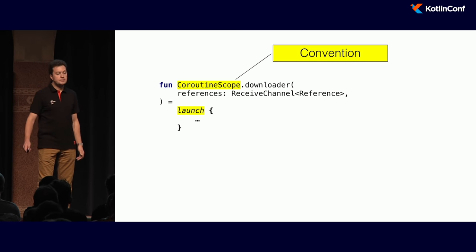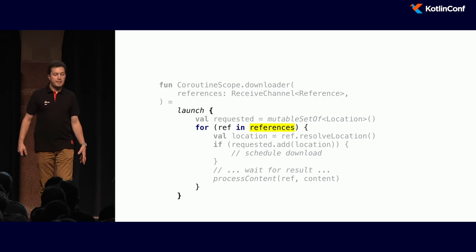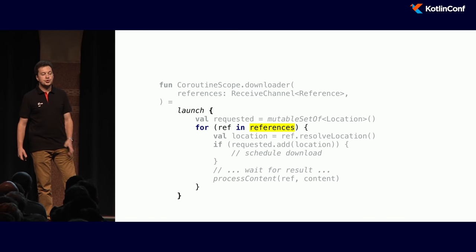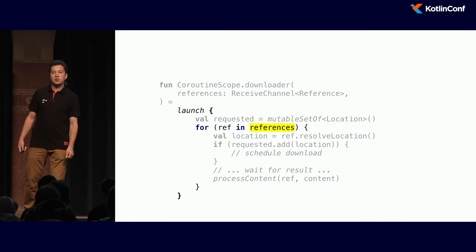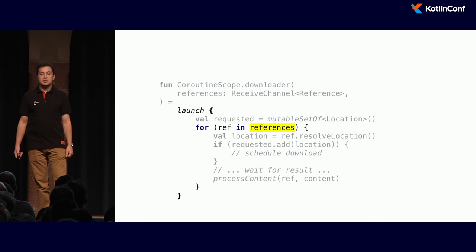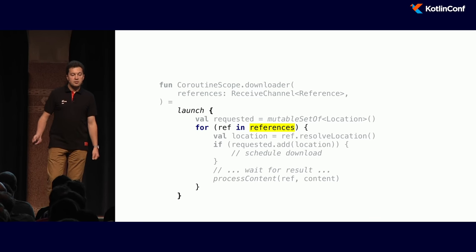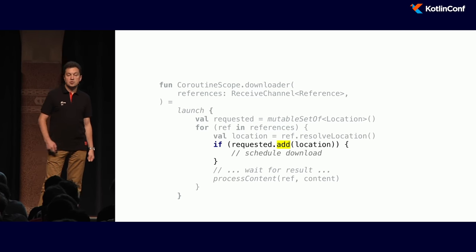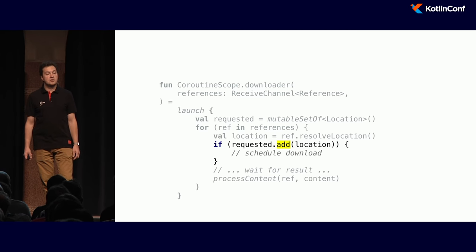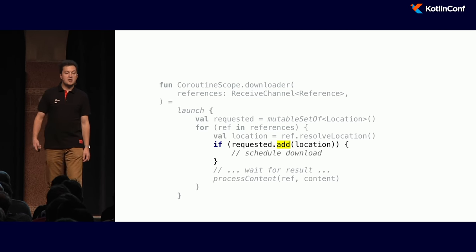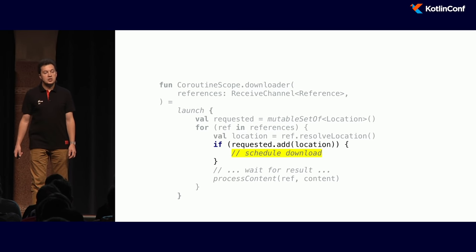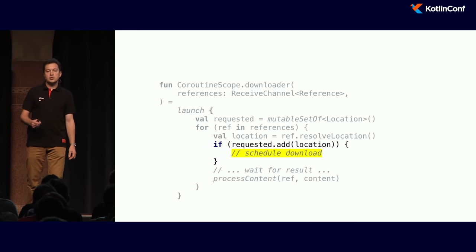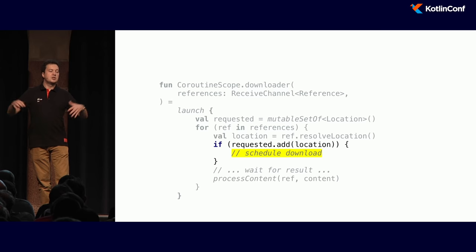It will launch according to whatever outside scope this function is called from. Inside the code, the channel works like a sequence of elements — we can use a `for` loop to get references being sent to this coroutine. We can take a reference, resolve the location, add it to our set of requests. And if it's the first time, we need to schedule the download. We don't want to do the download right here because if we do, we lose parallelism — remember we wanted to download in parallel.